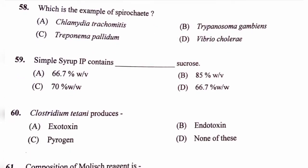Question number 59. Simple syrup IP contains what percentage of sucrose? Option A, 66.7% W/V; option B, 85% W/V; option C, 70% W/W; option D, 66.7% W/W. The correct answer is option D, 66.7% W/W — that means 66.7 grams of sugar or sucrose and 100 minus 66.7 grams of water.